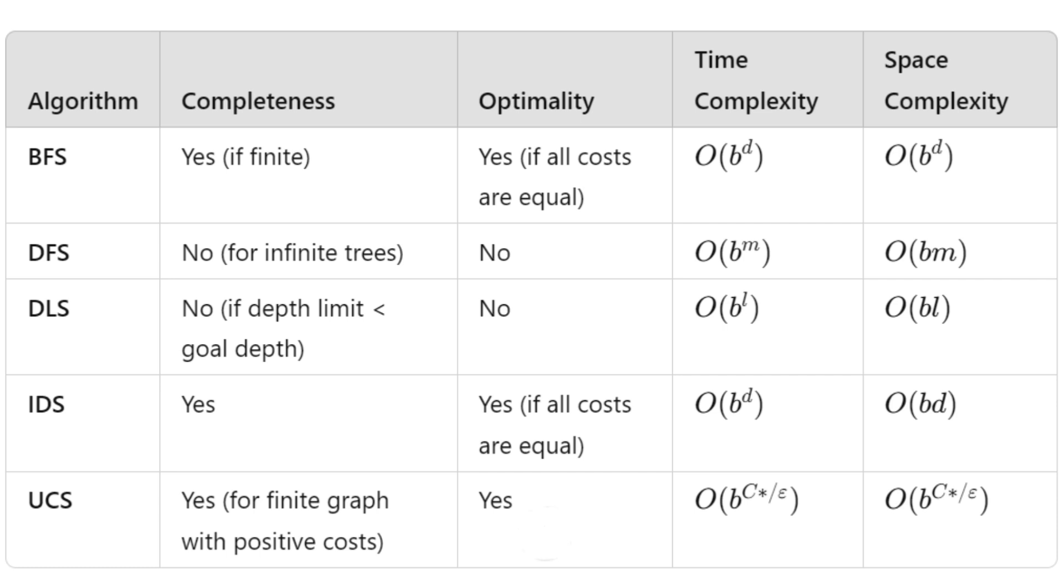Compared to IDS, UCS is better for weighted graphs, but IDS is more memory efficient for uniform cost problems. If your problem involves different path cost, UCS is the way to go. However, if memory is a concern, BFS or IDS might be more practical.